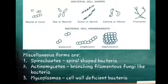These are the different bacterial cell shapes. The round or the cocci are present as spherical shaped bacteria. The rod or the bacilli are present as rods.